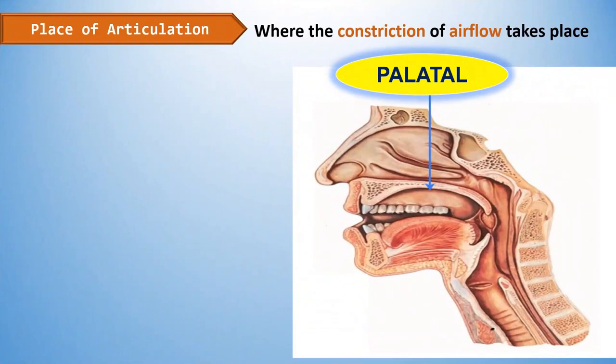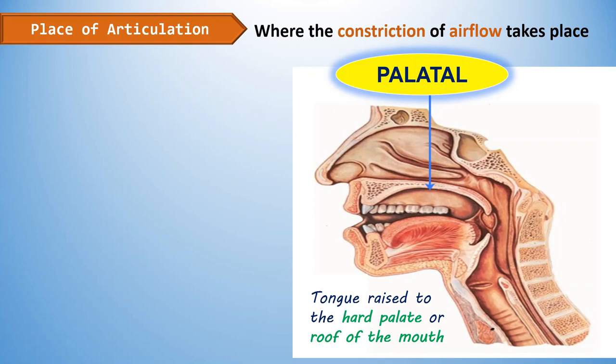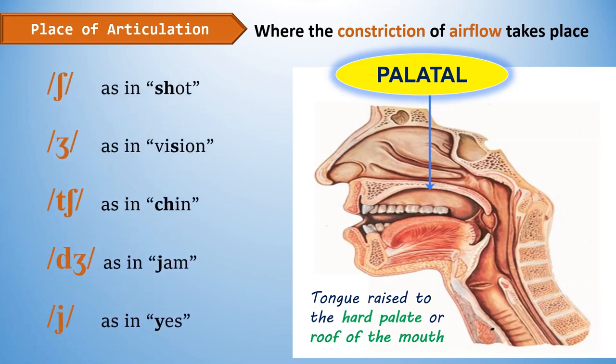We also have palatal sounds. These sounds are produced at the hard palate, or the roof of the mouth, by raising the tongue to that point and constricting airflow. The palatal sounds are: SH as in 'shot,' ZH as in 'vision,' CH as in 'chin,' J as in 'jam,' and Y as in 'yes.' Note that the last symbol looks like the letter J but its sound is Y, as in 'yo-yo.'